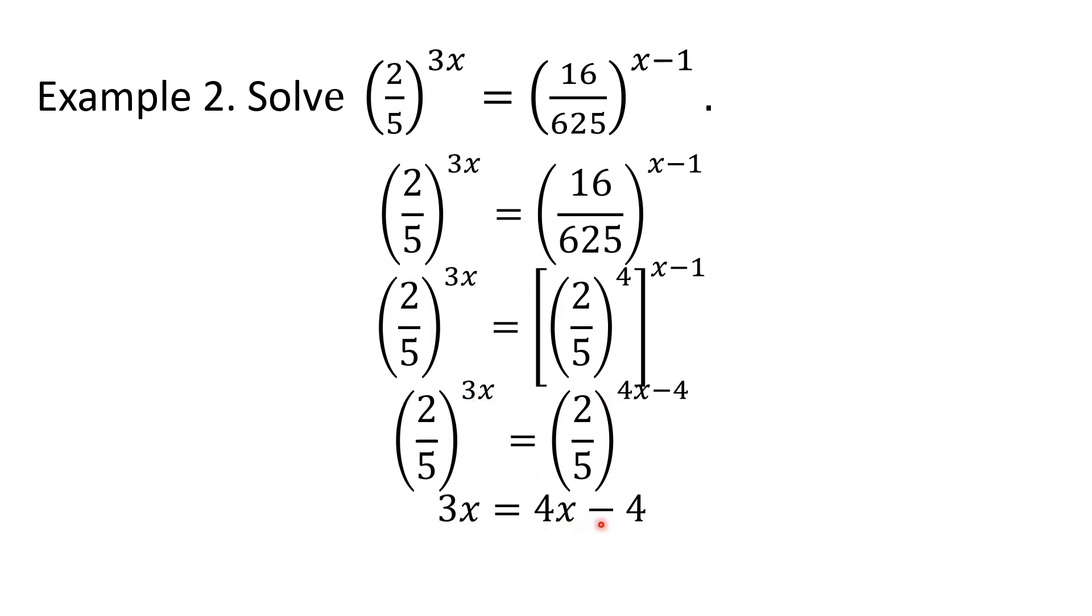So 3x is equal to 4x minus 4. And then to solve for x, we will use APE. We will add negative 4x to both sides, so we'll arrive at negative x equals negative 4. And then we will use MPE by dividing or multiplying both sides by negative 1, and we'll arrive at x equals 4. That is the value of this x. You may check it for yourself.